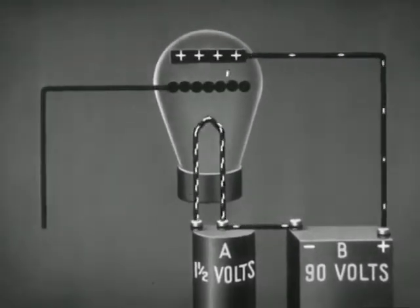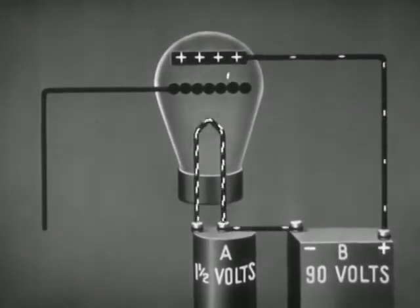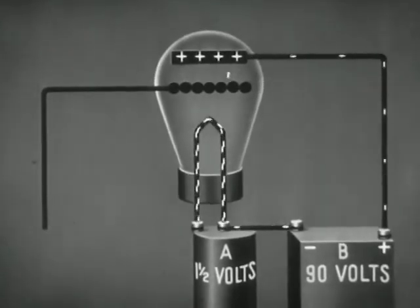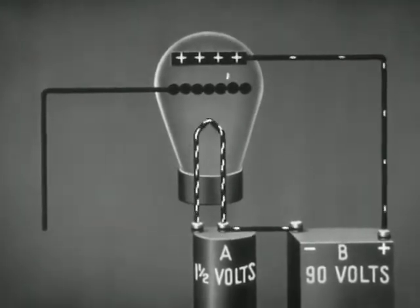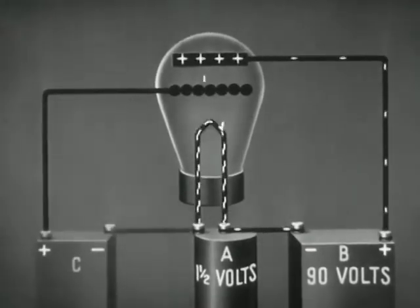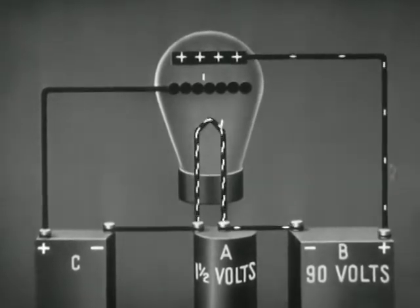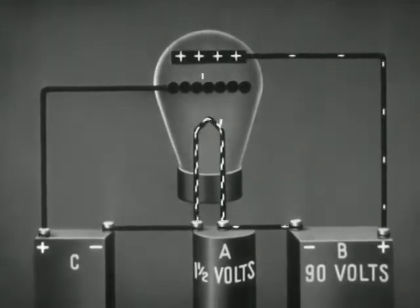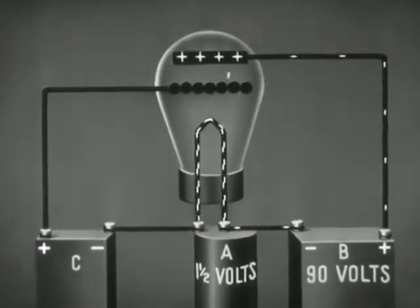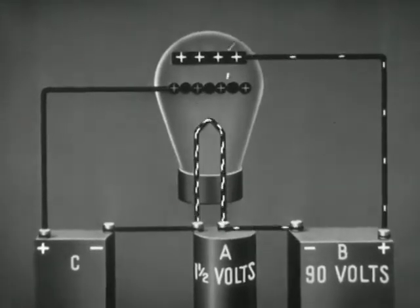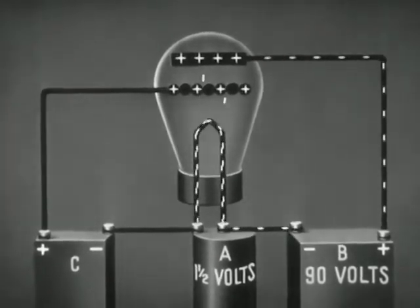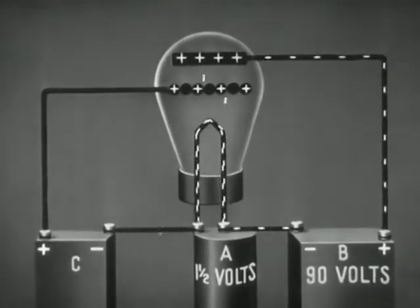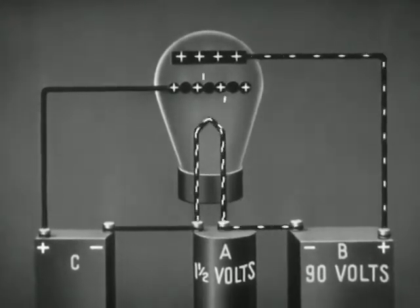A third element of wire mesh called the grid is inserted between the filament and the plate. Now let us connect the battery in the grid circuit so that the grid can be given a large positive charge. The pull of this positive charge is added to that of the plate and more current flows. Electrons moving from the filament to the plate pass through the spaces in the grid.